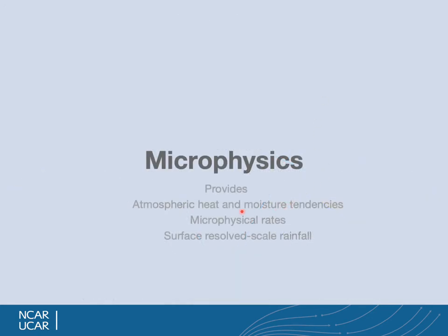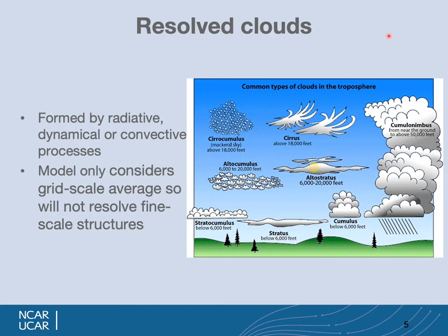The microphysics provides atmospheric heat and moisture tendencies, microphysical rates between species, and the surface resolved-scale rainfall. In microphysics we have to deal with any type of cloud that is resolved by the model. These clouds can be formed by radiative, dynamical, or convective processes. This is an illustration of the cloud types that you can represent at high enough resolution. Models only consider the grid-scale average, so they will not resolve the fine-scale structures in these clouds.